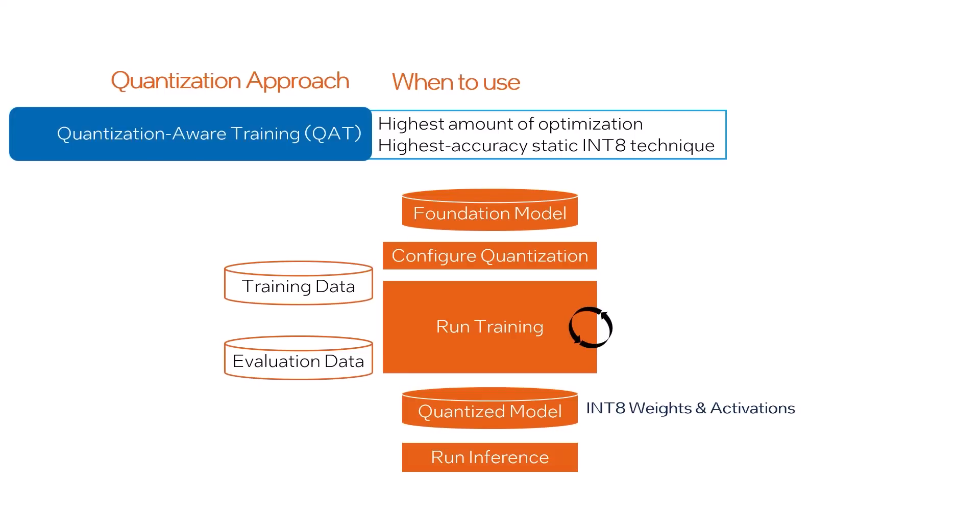This technique actually trains using FP32 data, but the FP32 values are rounded to mimic the precision of int8. Hence, the training is aware that the parameters will be quantized to int8 afterward, so it can properly tune the weight values. This comes at a cost of extra time and effort in the training phase.